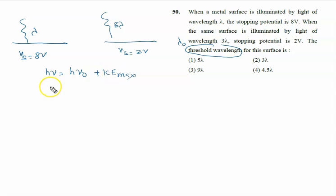h nu can be written as hc by lambda. This is equal to hc by lambda node. Kinetic maximum is eV into s.